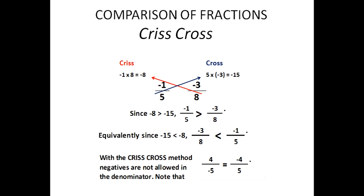Now we will compare fractions with negative numerators using the same crisscross method. Eight times negative one is negative eight; five times negative three is negative fifteen. Negative eight is greater than negative fifteen, thus negative one over five is greater than negative three over eight. You could also write this as negative three-eighths is less than negative one-fifth. With the crisscross method, negatives are not allowed in the denominator — note that four divided by negative five equals negative four over five, so move any negative sign from the denominator to the numerator.